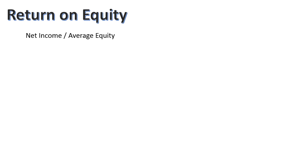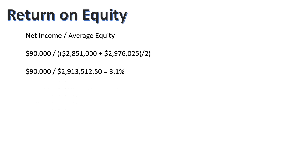Return on equity is the last thing to calculate. Just like always, anytime you hear 'return' think income — net income over average equity. Our $90,000 net income divided by the average of our beginning and ending equity gives us a return on equity of 3%. You'd need to compare that with other companies in your industry to find out how strong that is.